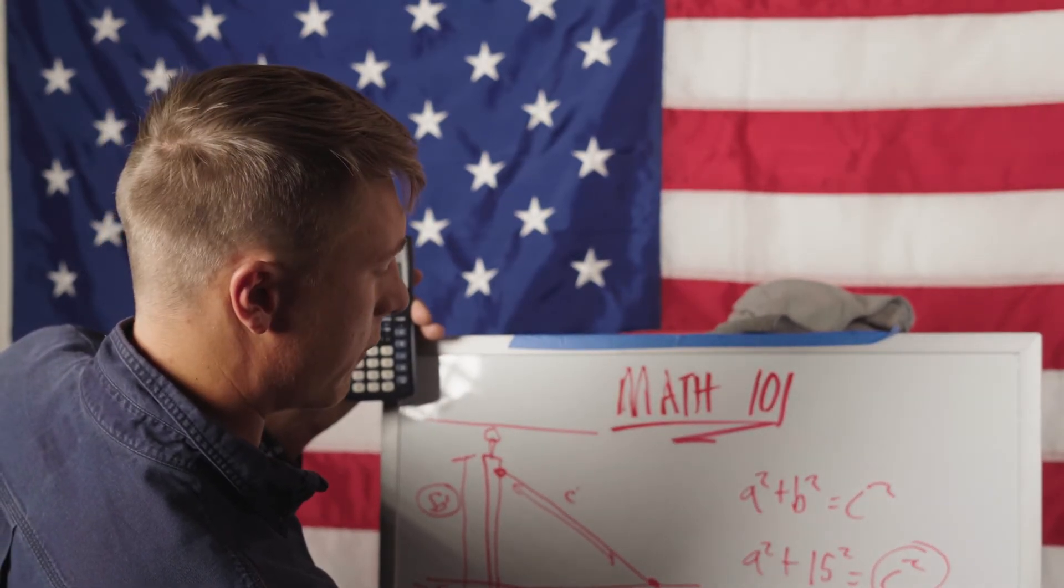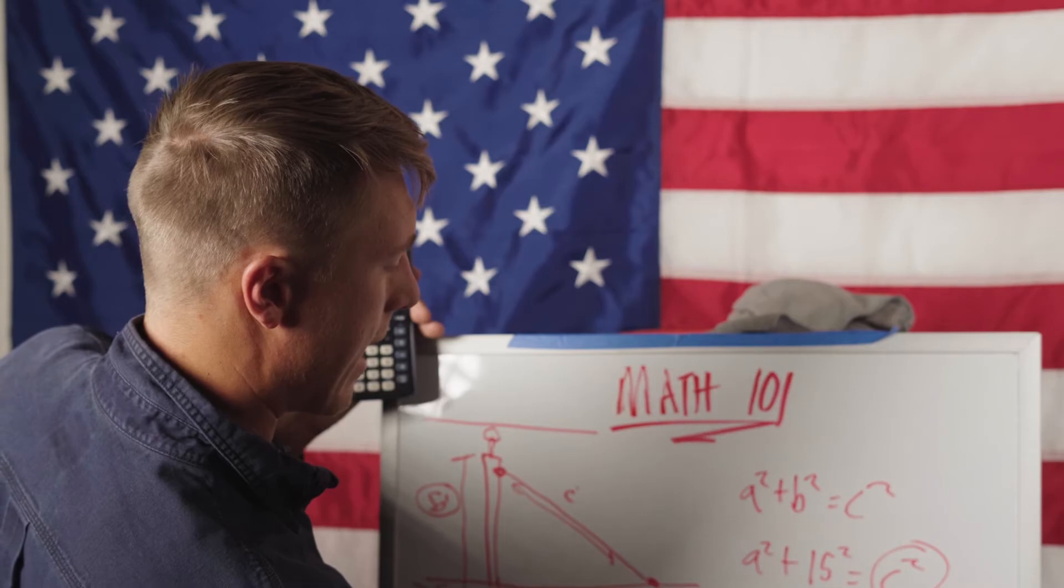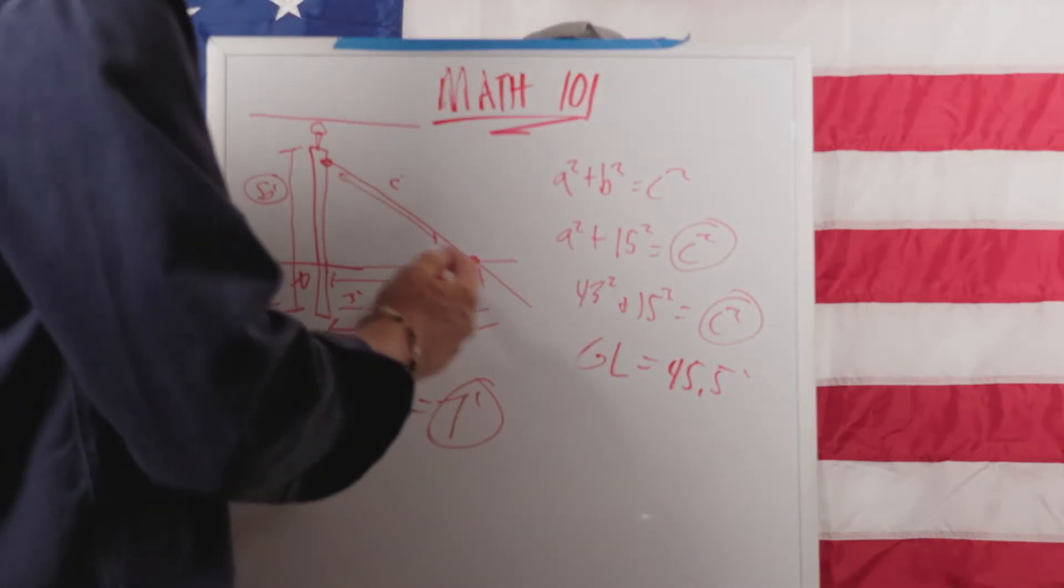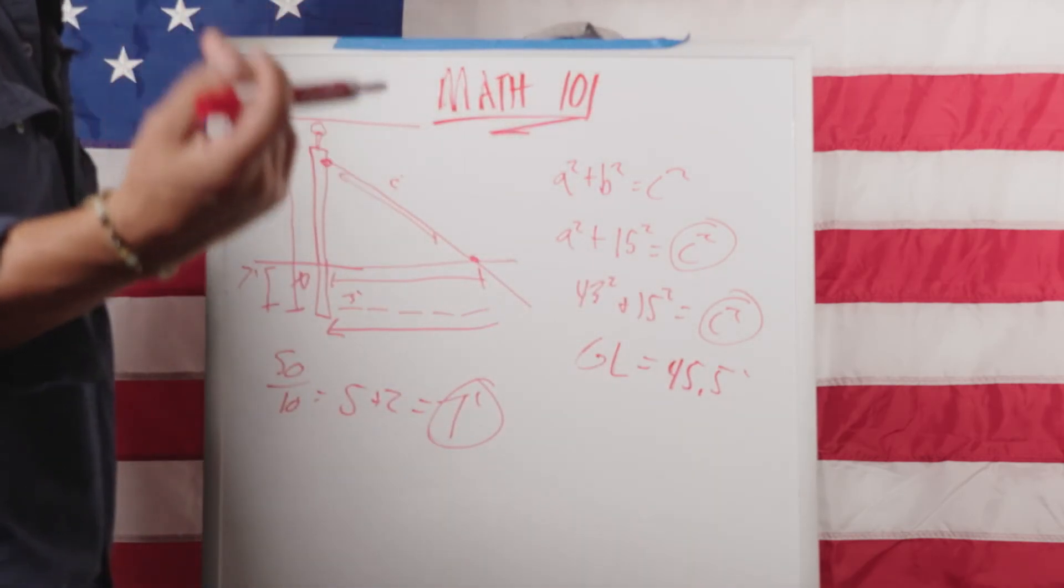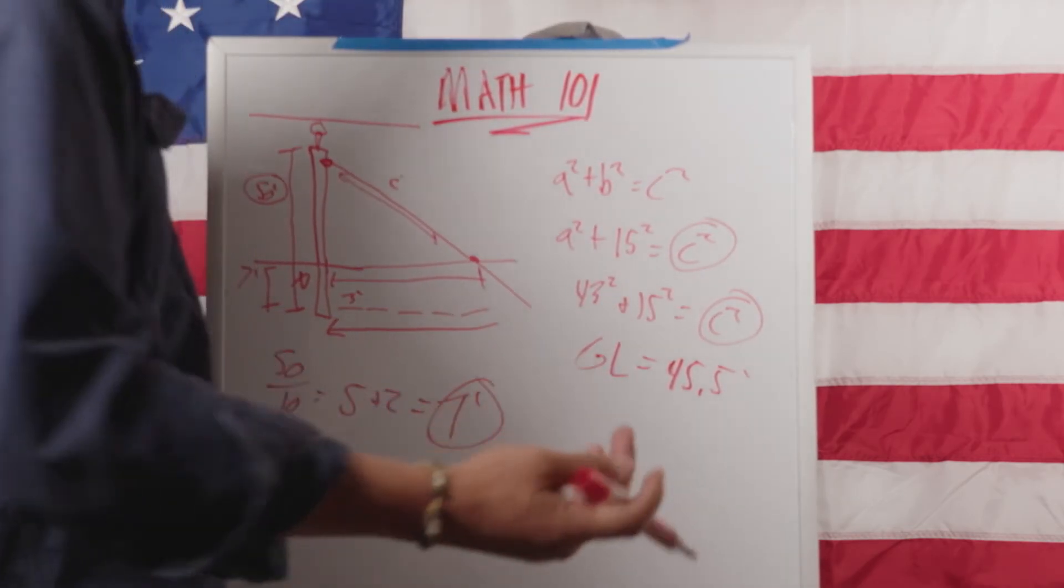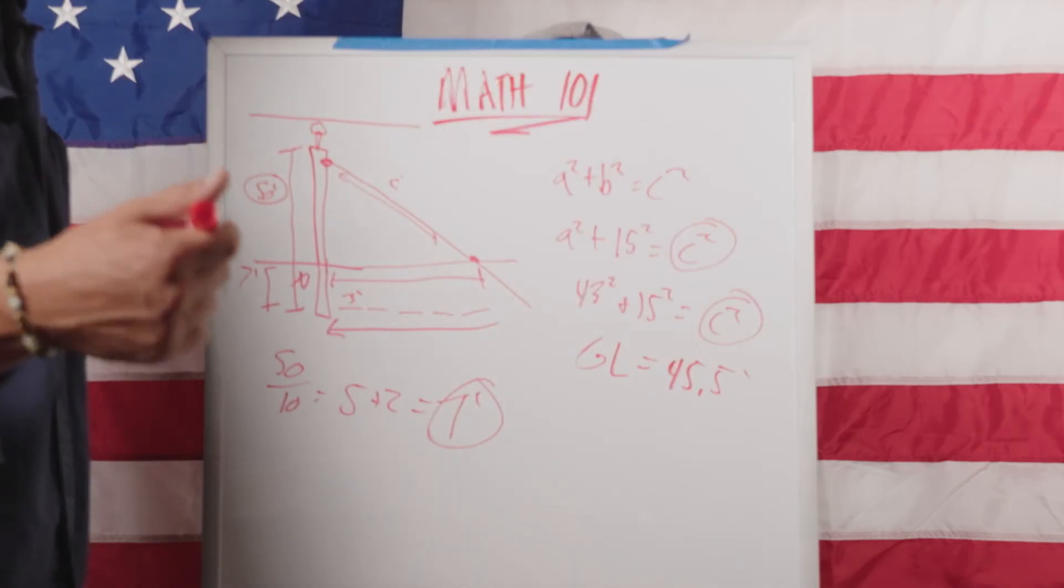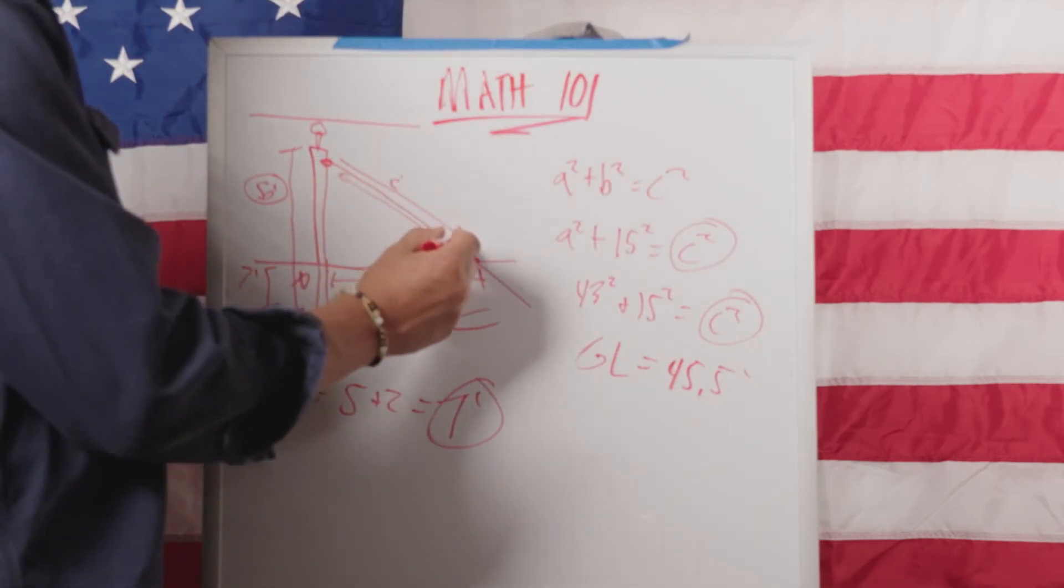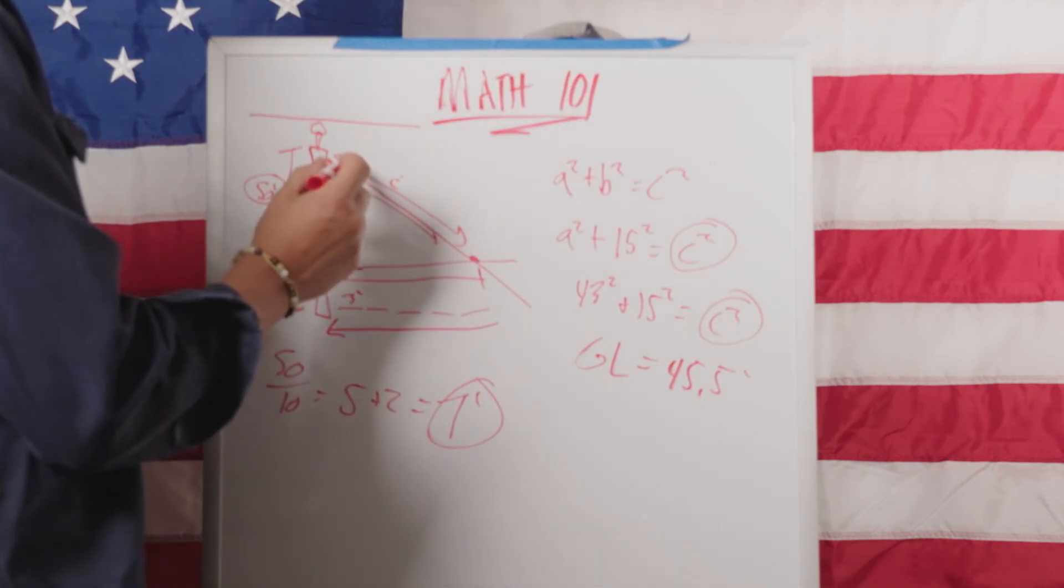So we know that the guy length is going to be about 45 and a half feet long. So then you could step that out approximately. Remember, it's always better too long than too short. So you could step out a piece of guy wire 50 feet, you know it's gonna be plenty long.